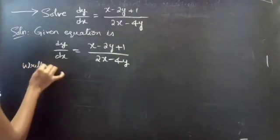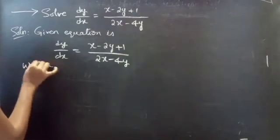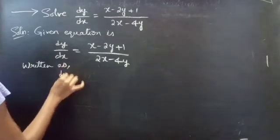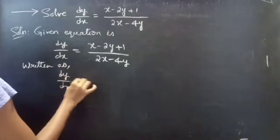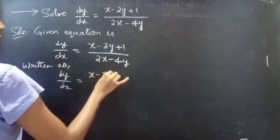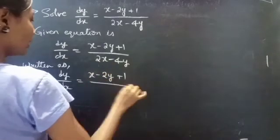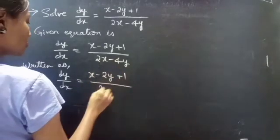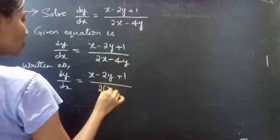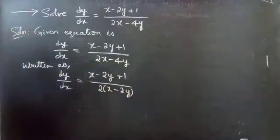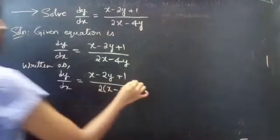This is written as dy/dx equals (x minus 2y plus 1) divided by — taking 2 common from the last two terms in the denominator — you will get 2 times (x minus 2y). Consider this as equation 1.